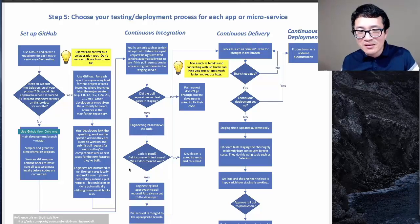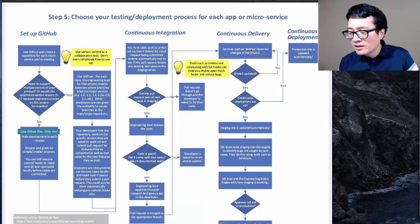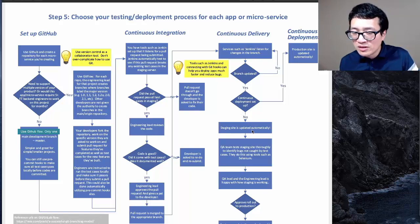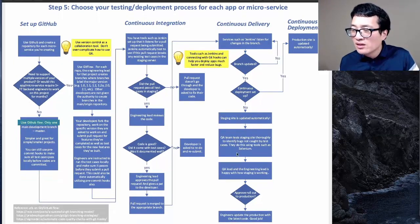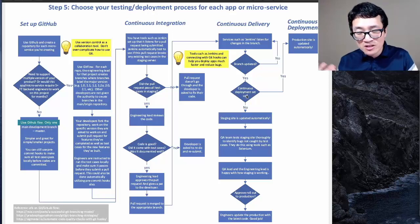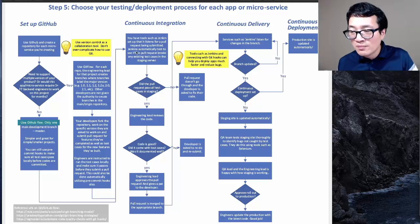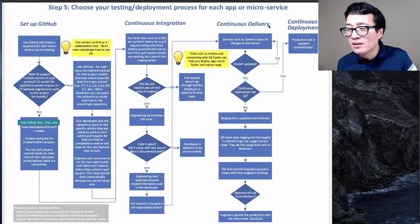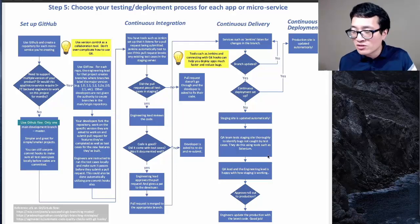Continuous delivery means: once Jenkins runs and new features don't break test cases, it automatically updates staging. The QA team and engineering lead review it, then decide whether to push to production. Continuous deployment goes one step further — if your test cases are so strong and Jenkins finds no errors, it automatically updates production. You submit a pull request and see it live in production continuously. That's continuous deployment.